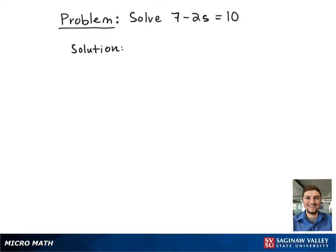Here we have the linear equation 7 minus 2s equals 10. We're just going to simply rewrite the equation down below so we can look at it better.